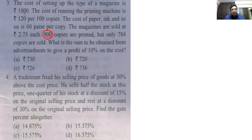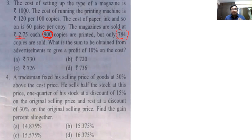How many units do I want to produce? We have the per unit selling price. The remaining balance — the difference between the cost of producing 900 copies and the amount obtained by selling 784 copies at Rs.2.75 — has to be covered through advertisement, considering that I should get 10% more than my total cost.